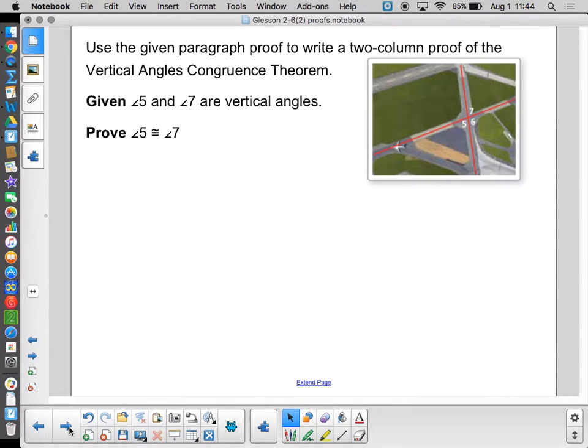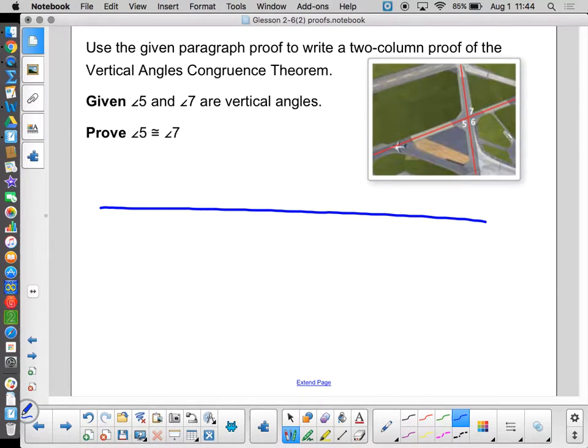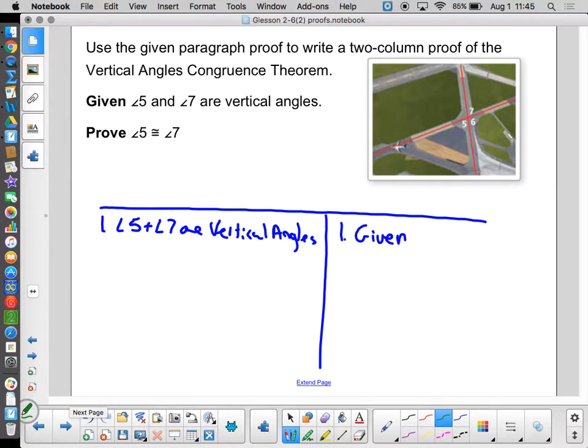We aren't given a paragraph proof. We're just going to go ahead and write a two-column proof. So we're going to prove angle 5 and angle 7 are vertical angles, and then prove that they're congruent without actually using – we can't use the vertical angles congruent theorem because that's what we're proving. So what do we do?